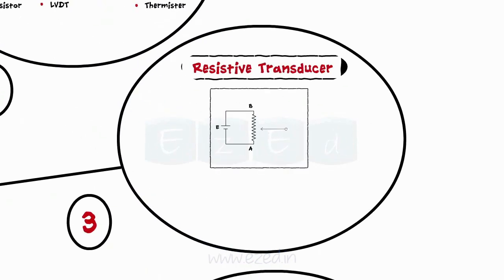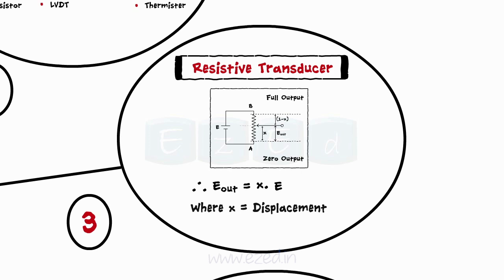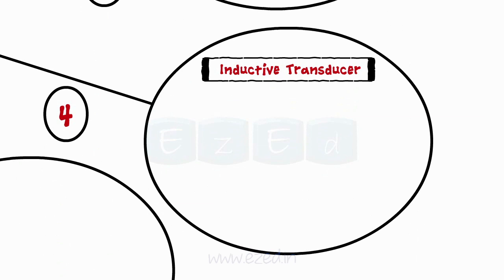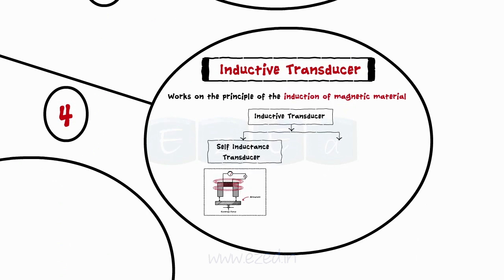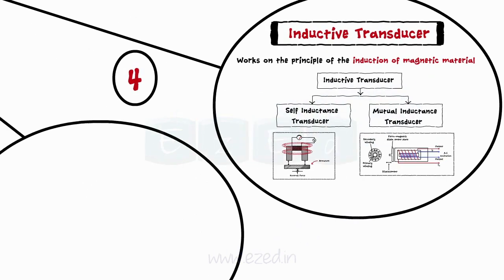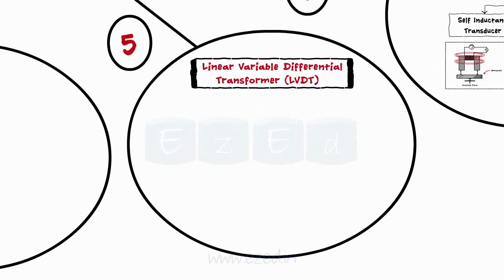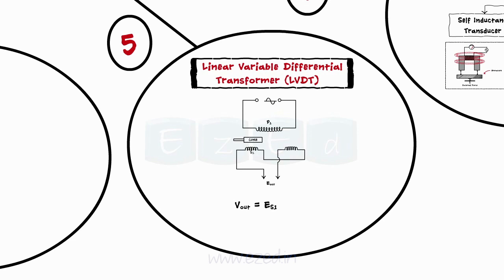In a resistive transducer, the change in the position of a slider changes the resistance of the circuit. Thus, change in displacement brings a corresponding change in the output. Inductive transducers work on the principle of induction of magnetic material. They are mainly of two types: self-inductance transducer and mutual inductance transducer. Next, we studied the linear variable differential transformer or LVDT, which converts mechanical movement of an object into equivalent electrical signal as Vout equals ES1 minus ES2, and Vout equals ES2 minus ES1.